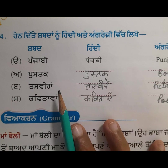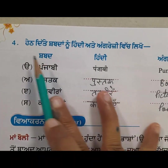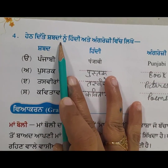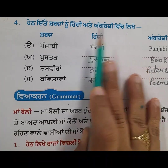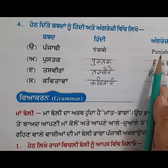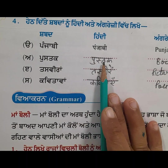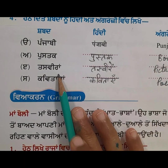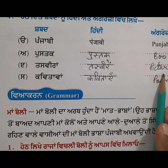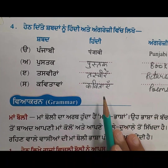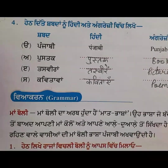Next, question number four — shabd noo Hindi ya angrezi vich likho, write the words in Hindi or English. Punjabi — Punjabi. Pustak — Pustak, Book. Tasveera — Tasveere, Pictures. Kavitama — Kavitaen, Poems.